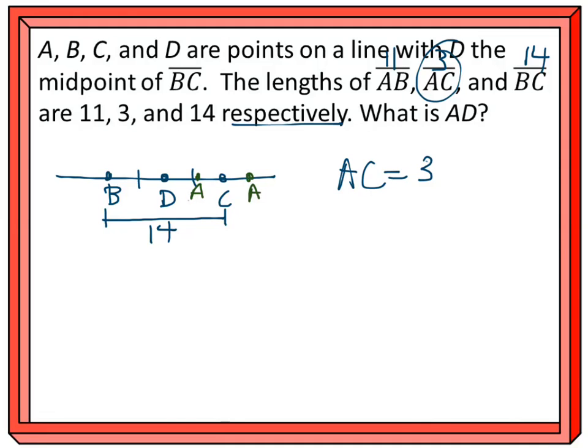Okay. So, let's see which one of these might make sense. So, AC is 3. I'm going to put a 3 here and I'm going to put a 3 here. Okay. Now, it says that from A to B, it's equal to 11.